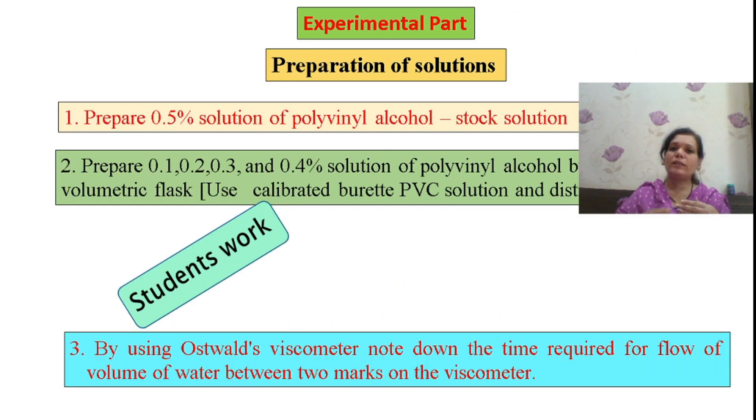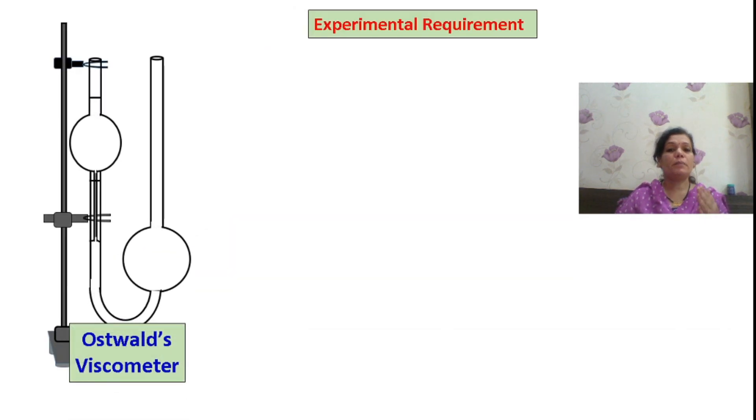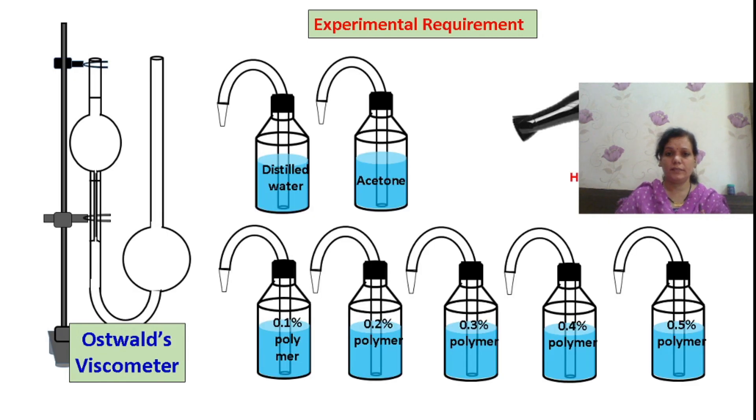Before moving to actual measurement of time of flow, we need to prepare the solution. Stock solution of unknown polymer has been provided at 0.5 percent and you need to prepare solutions of 0.4 percent, 0.3 percent, 0.2 percent and 0.1 percent. Do the theoretical calculation of these solution preparations in your notebook, confirm those calculations are correct, then prepare these solutions and keep your assembly ready.